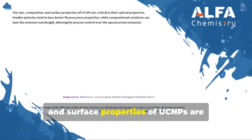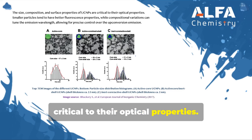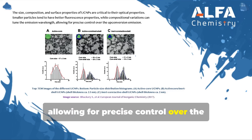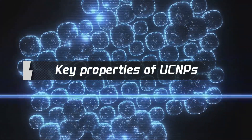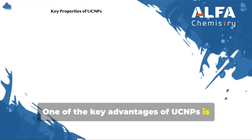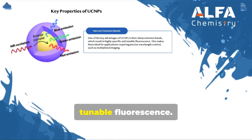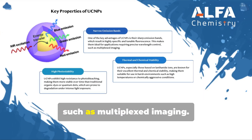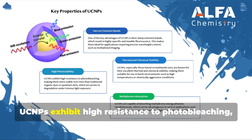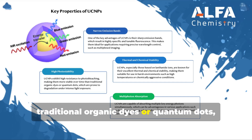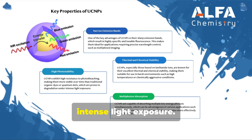The size, composition, and surface properties of UCNPs are critical to their optical properties. Smaller particles tend to have better fluorescence properties, while compositional variations can tune the emission wavelength, allowing for precise control over the upconversion emission. One of the key advantages of UCNPs is their sharp emission bands, which result in highly specific and tunable fluorescence. This makes them ideal for applications requiring precise wavelength control, such as multiplexed imaging. UCNPs also exhibit high resistance to photobleaching, making them more stable over time than traditional organic dyes or quantum dots, which are prone to degradation under intense light exposure.